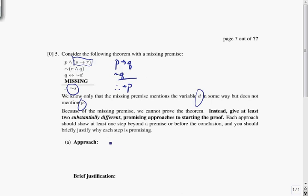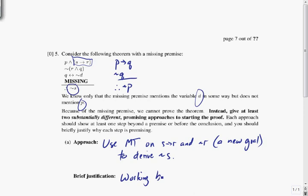I am going to use modus tollens on s implies r and not r, which is a new goal, rather than not s, to derive not s. And brief justification of that, working backward from conclusion.